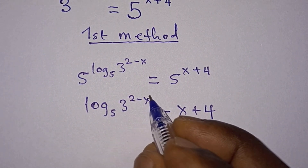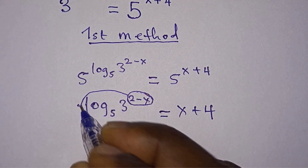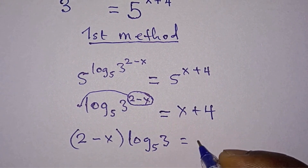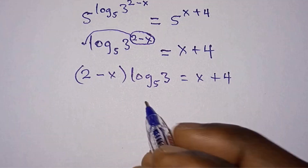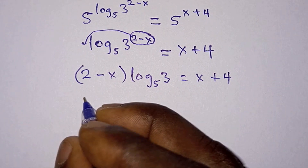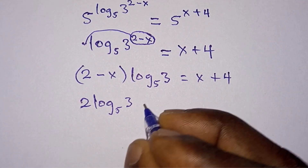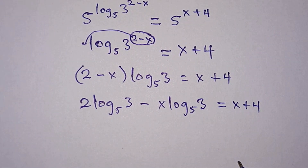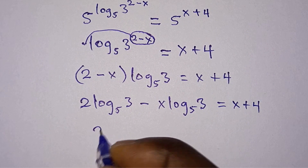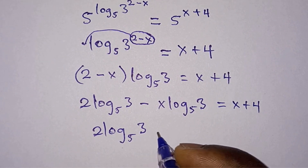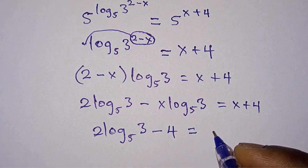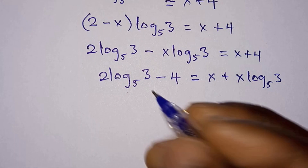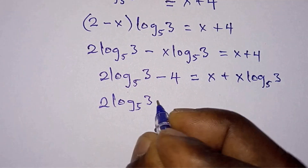From the properties of log, the exponent now becomes the leading number, so we will have 2 minus x times log base 5 of 3 is equal to x plus 4. Now let's distribute log base 5 of 3, so we have 2 log base 5 of 3 minus x log base 5 of 3, and this is equal to x. Then we move x terms: x plus x log base 5 of 3, so on the left hand side we have 2 log base 5 of 3 minus 4.